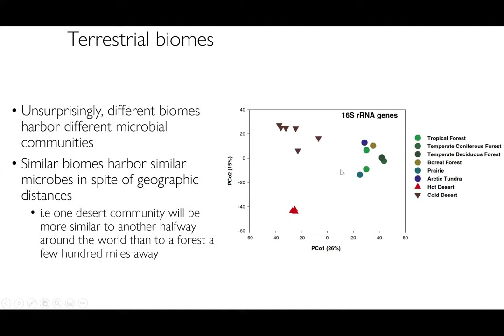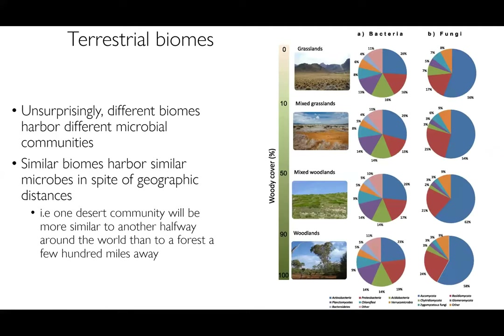The big takeaway from this graph is that we see all the reds clustering, browns clustering, and then there's a mix of tropical and temperate forests. This tells us that different biomes harbor very different microbial communities, and the more similar the biomes are — despite how far apart they are — the more similar their microbes. Temperate forests cluster together but are very distinct from cold deserts and hot deserts, which makes sense given how different the environmental conditions are.